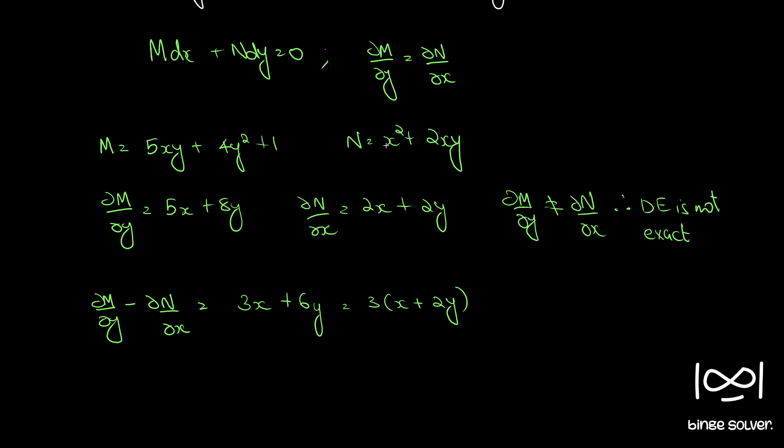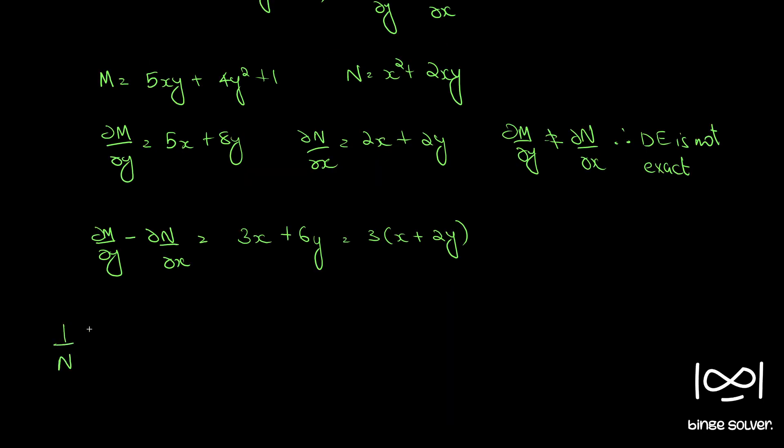If you observe, you take x from N outside so x plus 2y and this cancels out. So we will see 1 by N into dou M by dou y minus dou N by dou x is 1 by x into x plus 2y.